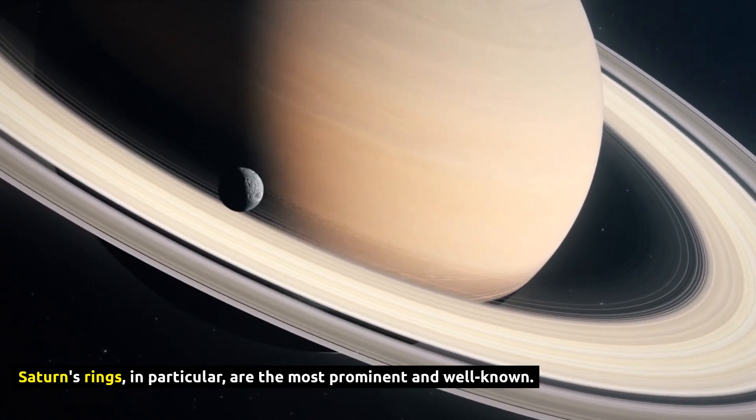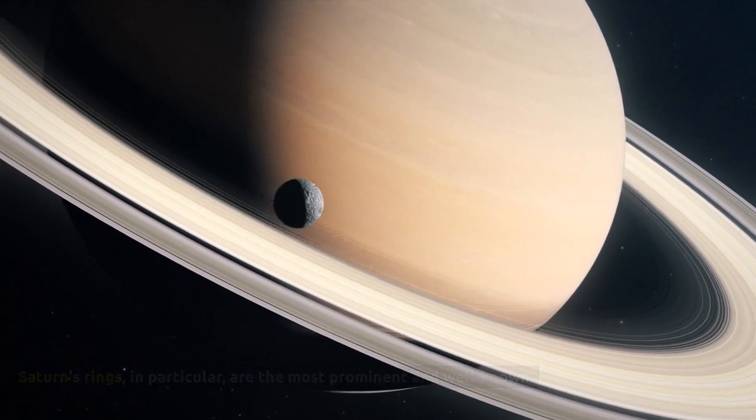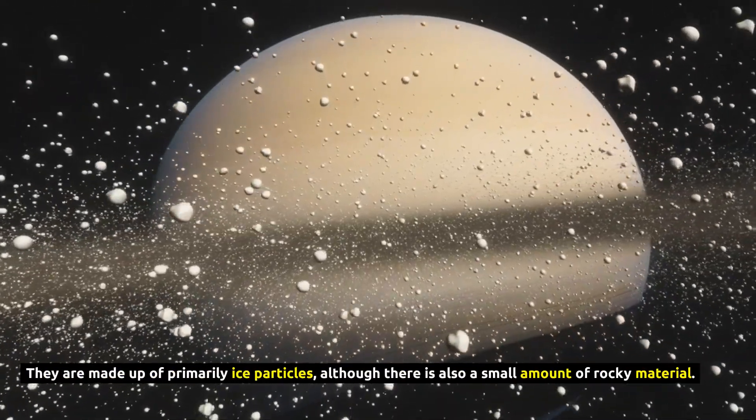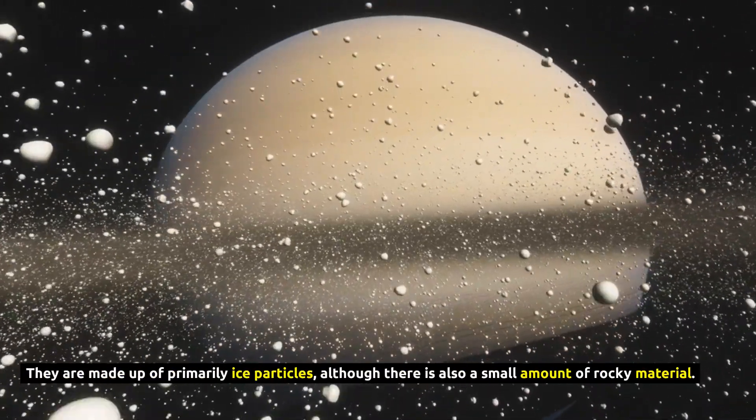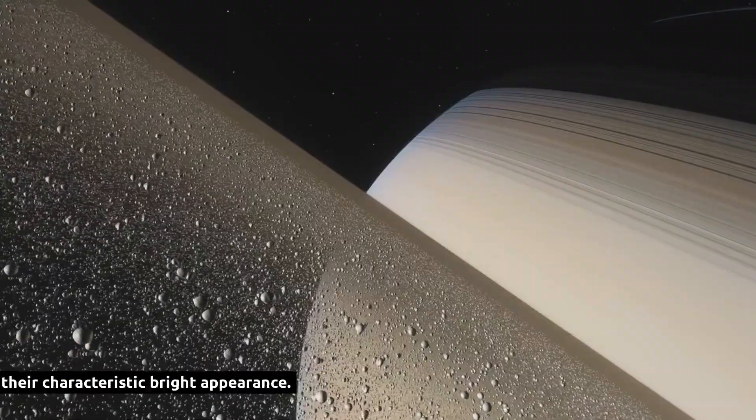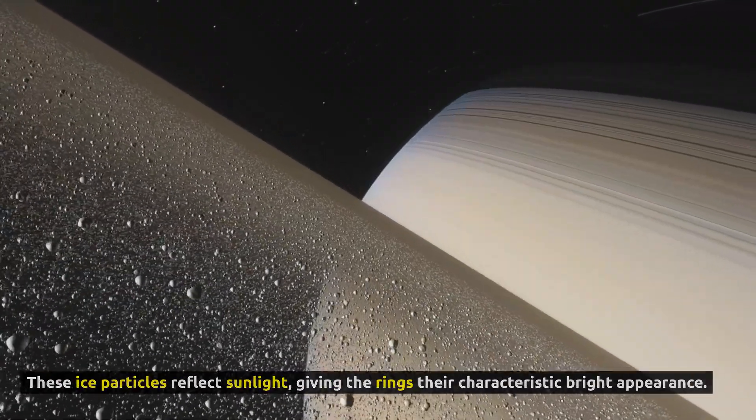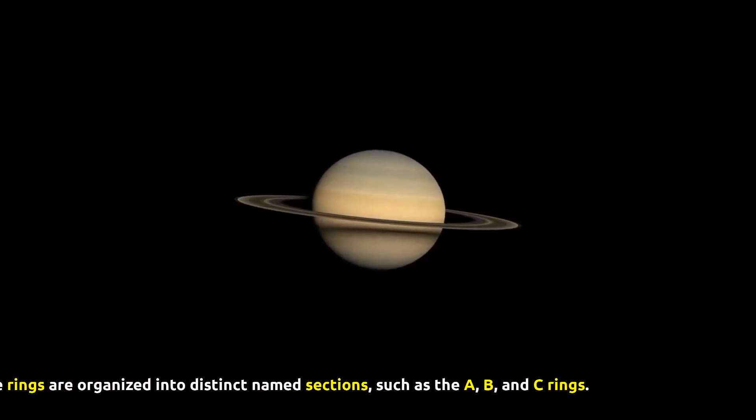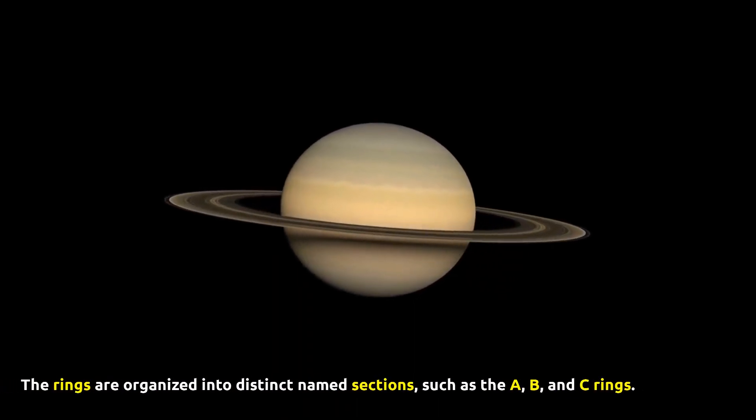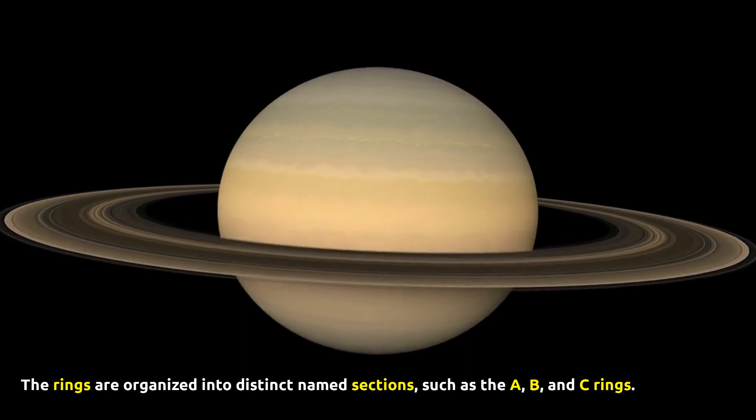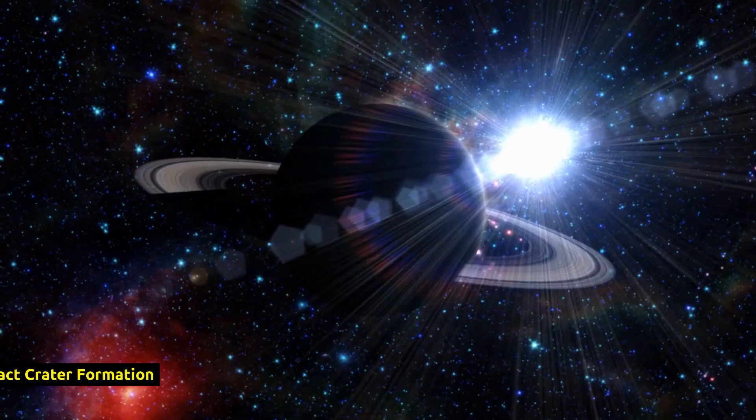Saturn's rings, in particular, are the most prominent and well known. They are made up of primarily ice particles, although there is also a small amount of rocky material. These ice particles reflect sunlight, giving the rings their characteristic bright appearance. The rings are organized into distinct named sections, such as the A, B, and C rings.